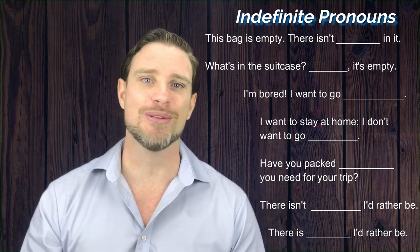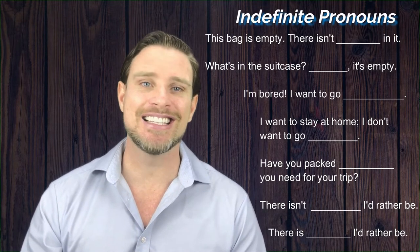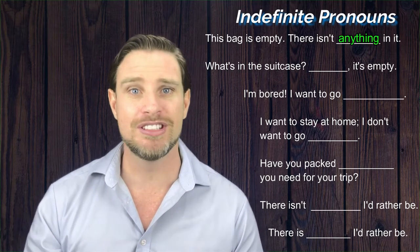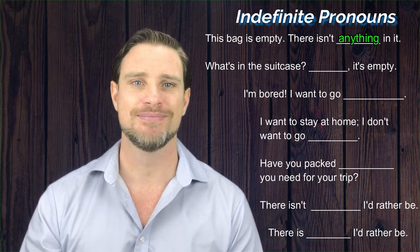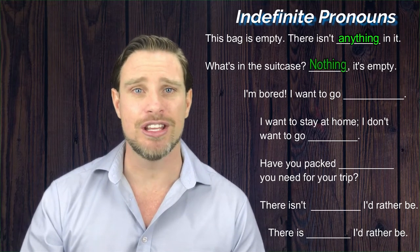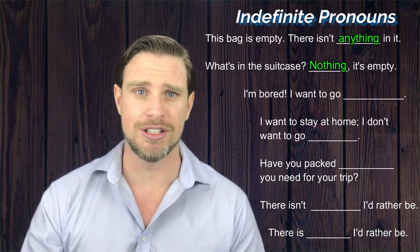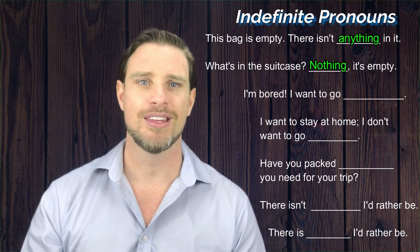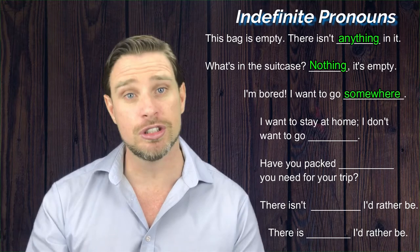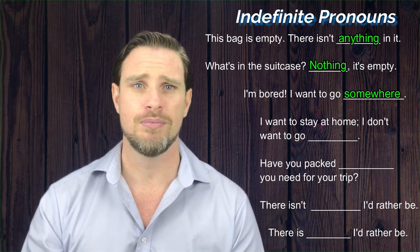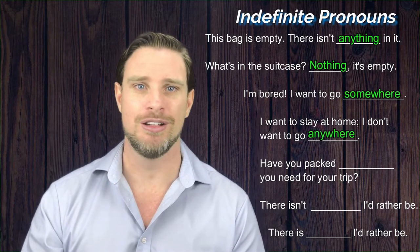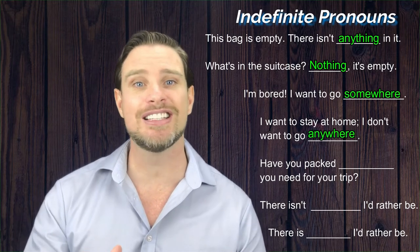Alright, let's go through them. Number one: the answer is 'anything', because this is a negative sentence. Number two: the answer is 'nothing', because this is a positive sentence. Number three: the answer is 'somewhere', because this is a positive sentence. Number four: the answer is 'anywhere', because this is a negative sentence.